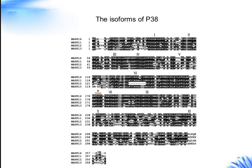Mammalian P38 mitogen-activated protein kinases (MOPCs) are activated by a wide range of cellular stresses as well as in response to inflammatory cytokines. There are four members of the P38 MOPC family: P38-alpha, P38-beta, P38-gamma, and P38-delta, which are about 60% identical in their amino acid sequence but differ in their expression patterns, substrate specificities, and sensitivities to chemical inhibitors. A large body of evidence indicates that P38 MOPC activity is critical for normal immune and inflammatory response.